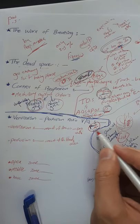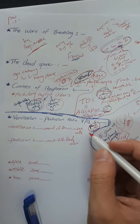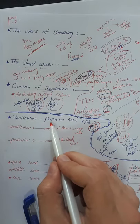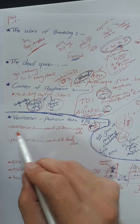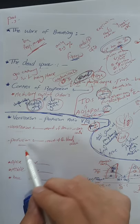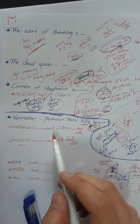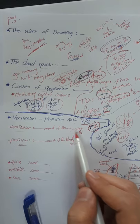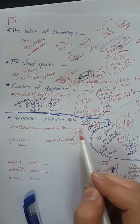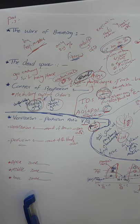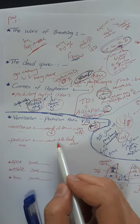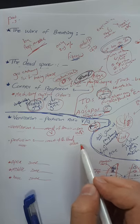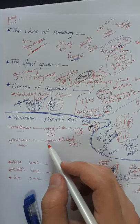In part 4 of the physiology of the respiratory system, we have ventilation and perfusion ratio. Ventilation is essentially the amount of air or gas traveling into your alveoli, ready for gas exchange, abbreviated as V. Perfusion is the amount of blood flow going into the alveoli, also prepared for gas exchange.